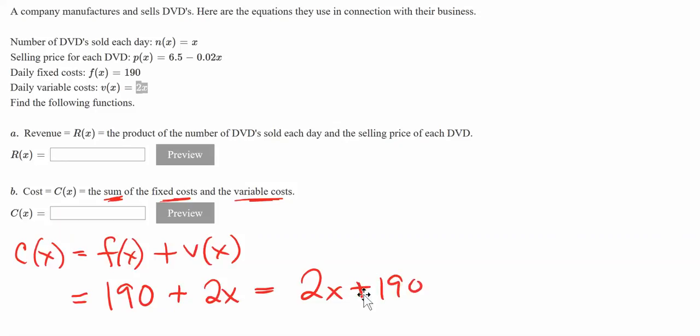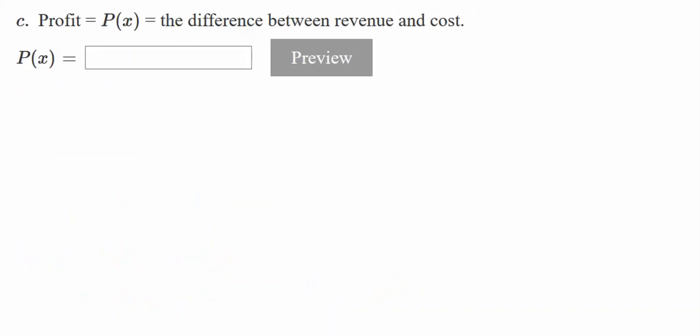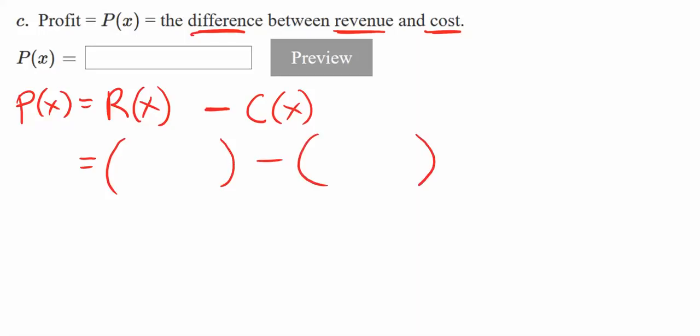Part C is profit. Let's write the equation for it. P(x) equals the difference - we're subtracting now. The difference of revenue, which we made a formula for in part A, and cost, which we made a formula for in part B, labeled as C(x). Let's go to parts A and B and figure out what we need to plug in.